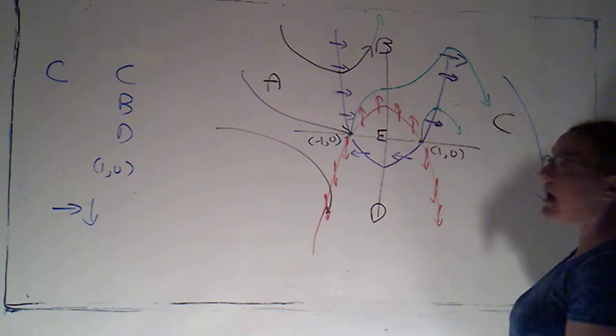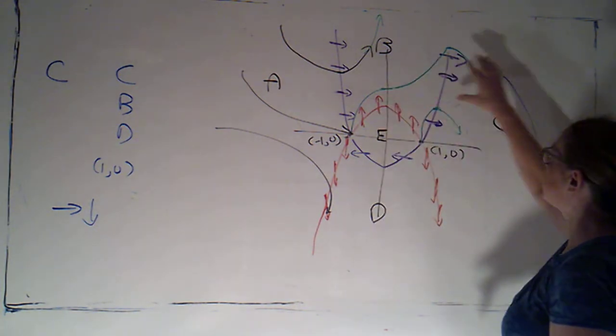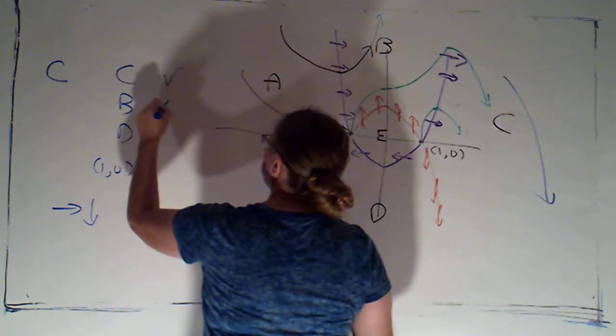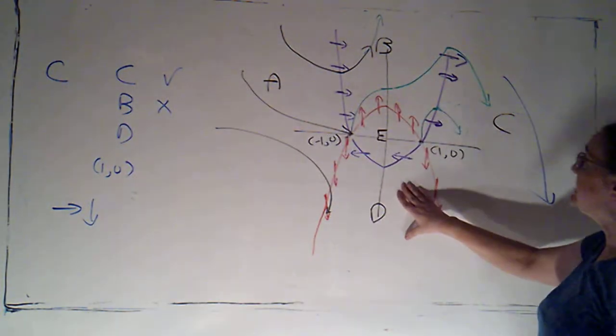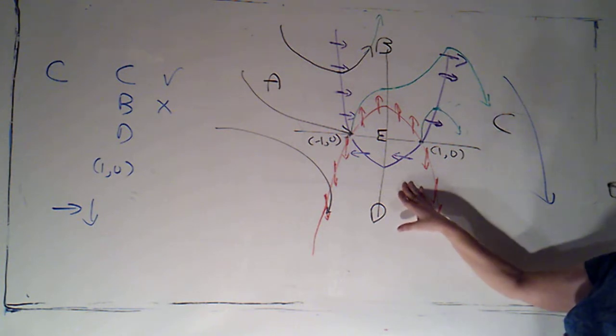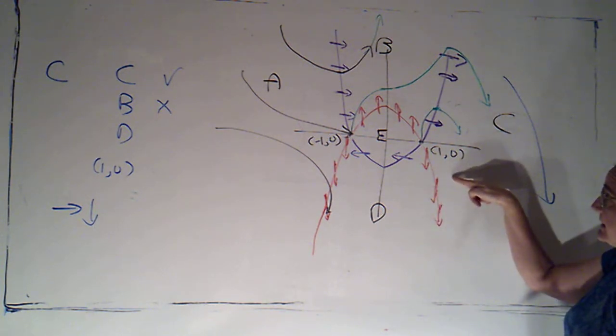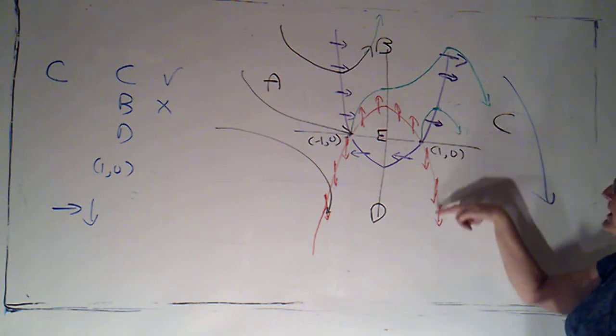Could I go into B? No. B is always to the left of C. These arrows are pointing to the right. Could I go into D? That looks possible, because notice D is below C, and these arrows are pointing down.